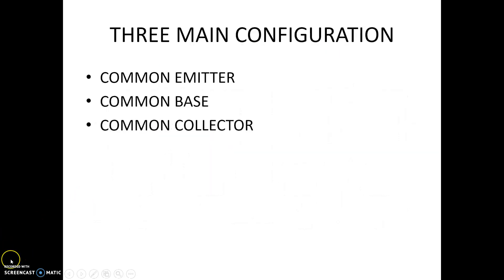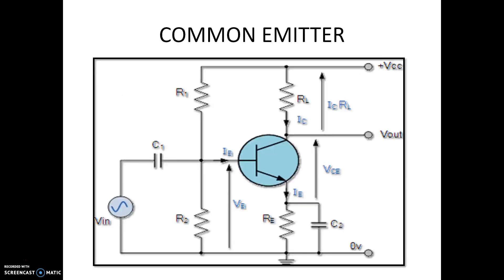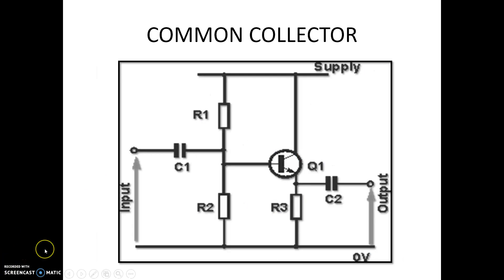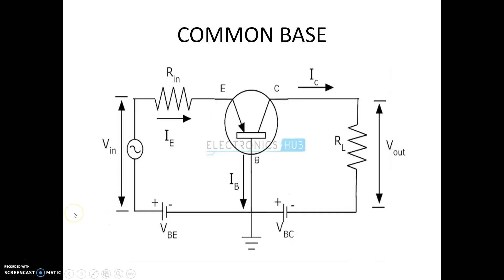There are three main configurations of bipolar junction transistors: namely the common emitter, the common base, and the common collector. This is the common emitter circuit diagram in which the emitter is common, as the name itself suggests. This is the common collector circuit diagram in which the collector is common, and this is the common base in which the base is common to the sources.